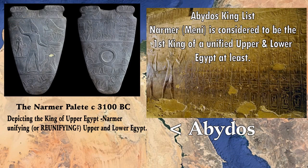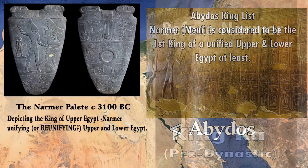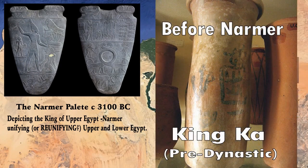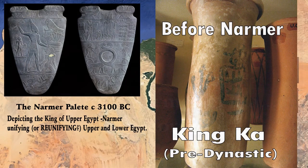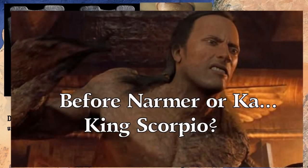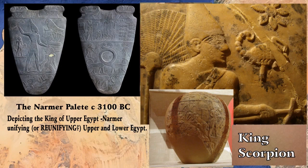The reunification of Egypt leads us to consider the famous Abydos kings list, where King Narmer or Meni is considered to be the first king of a unified upper and lower Egypt. However there is quite a bit of important information regarding pre-dynastic kings. For instance we have King Ka, Petri and others well defined before King Narmer. Before King Narmer we also had King Scorpion — not to be confused with the movie.